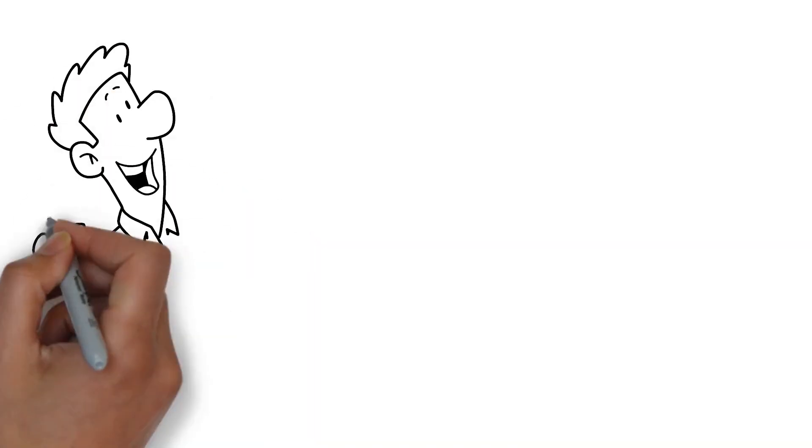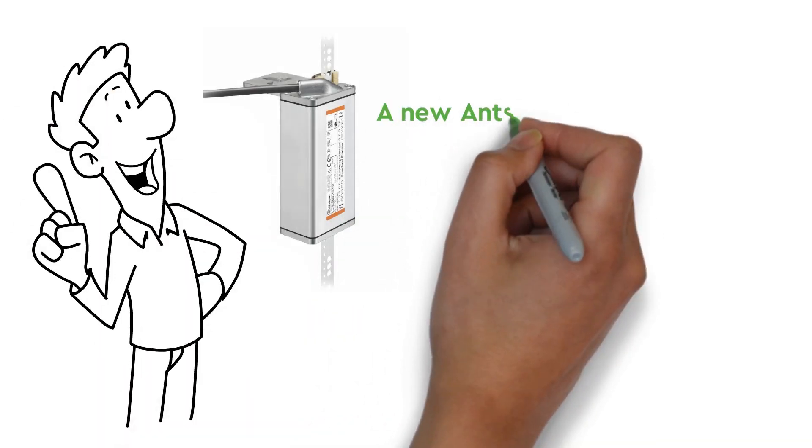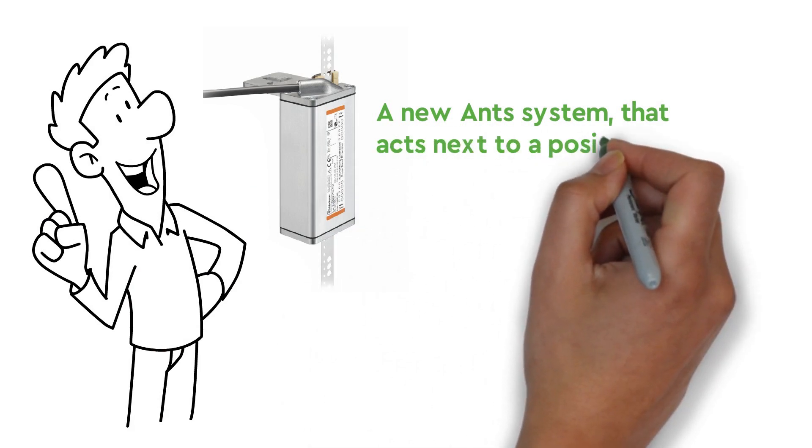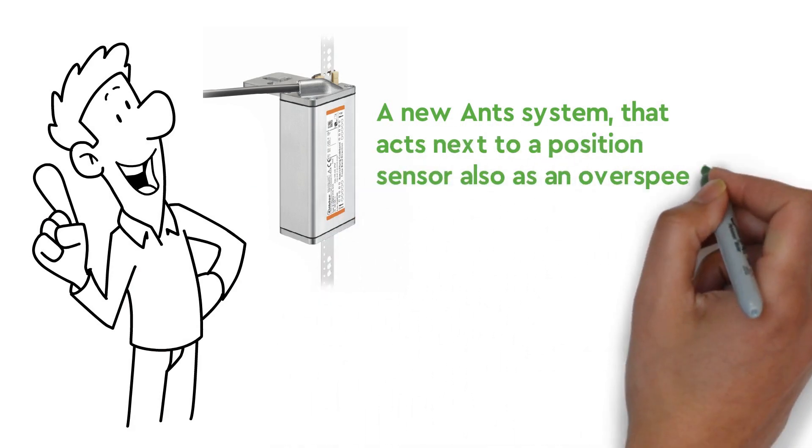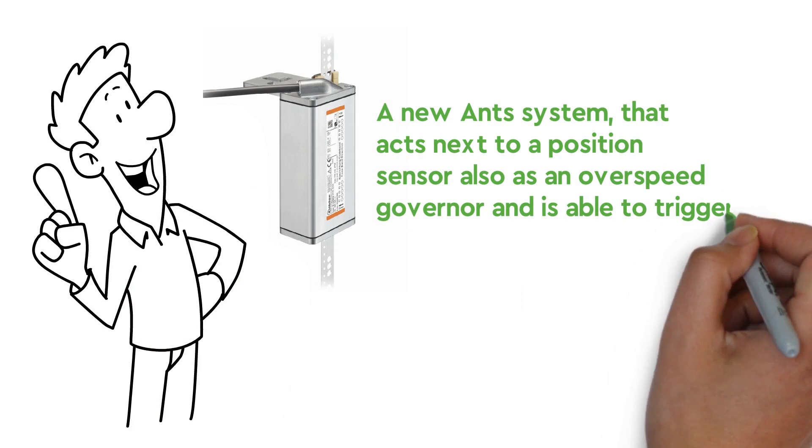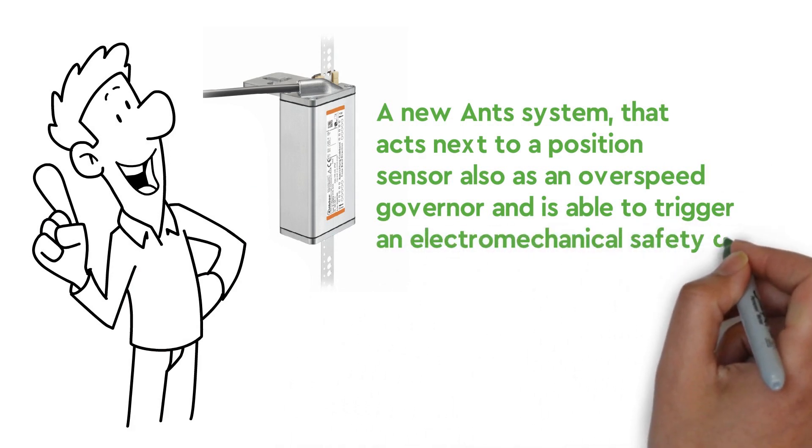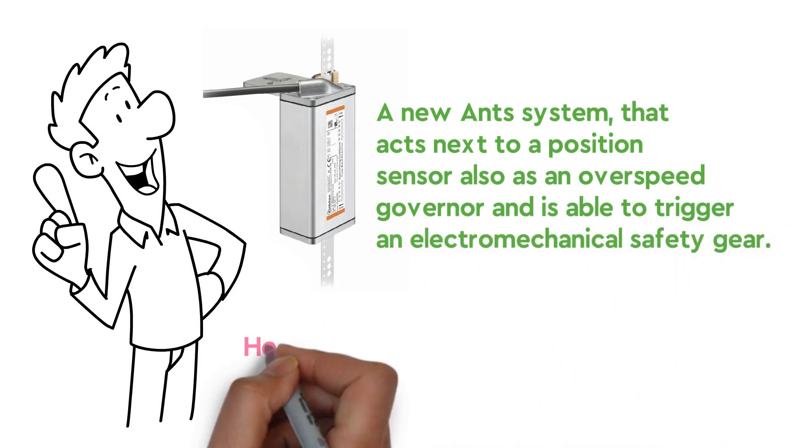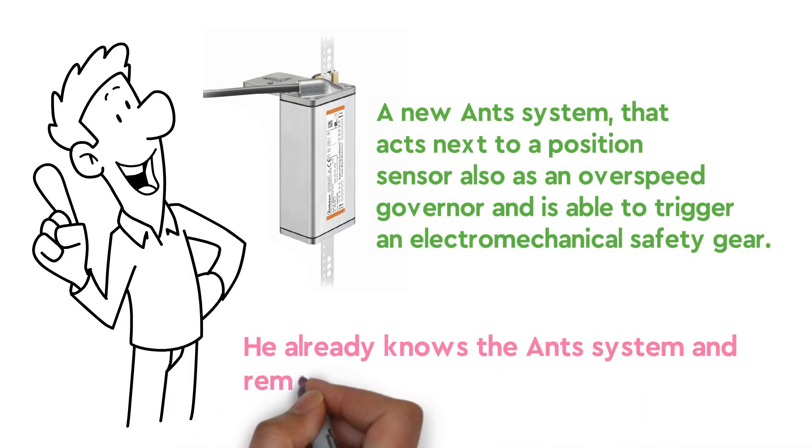John has heard of an innovative project, a new ANT system, that acts as a position sensor, also as an overspeed governor, and is able to trigger an electromechanical safety gear. He already knows the ANT system and remembers the simple mounting process.